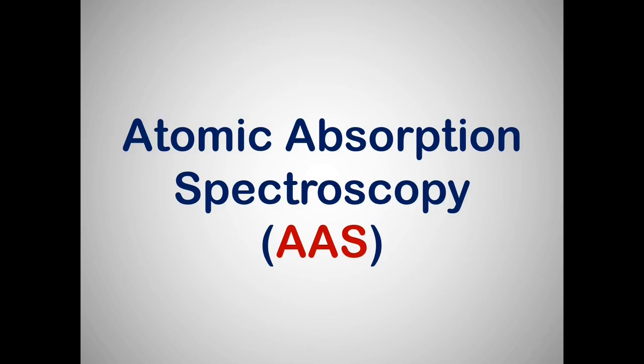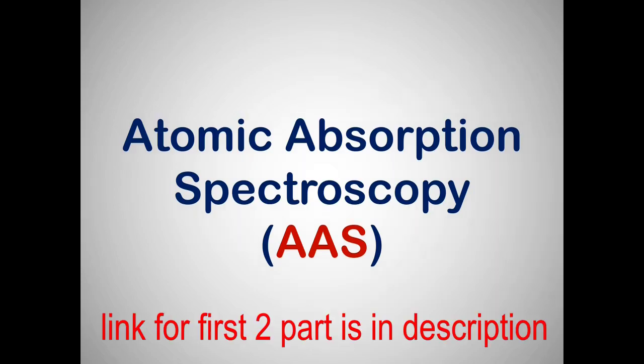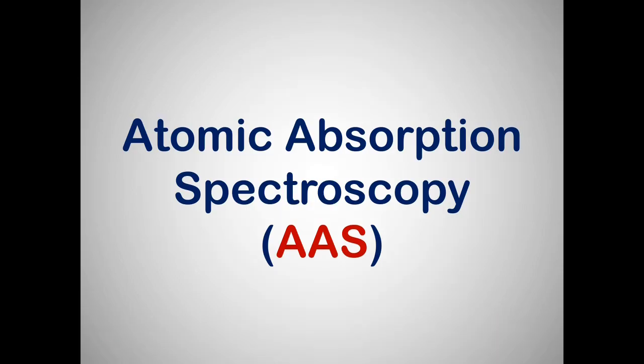We come to the third part of atomic spectroscopy, which is Atomic Absorption Spectroscopy, AAS. This spectroscopy works on the principle of absorption. This absorption is more tricky than emission. In case of emission, you can take any sample and throw it into the flame and make it emit light. But in absorption spectroscopy, you have to analyze what light is being absorbed by the sample.